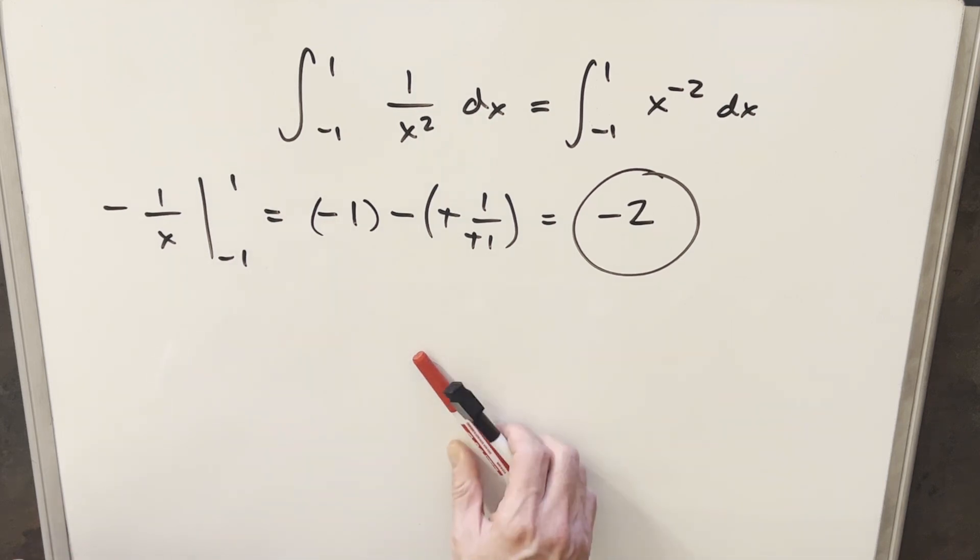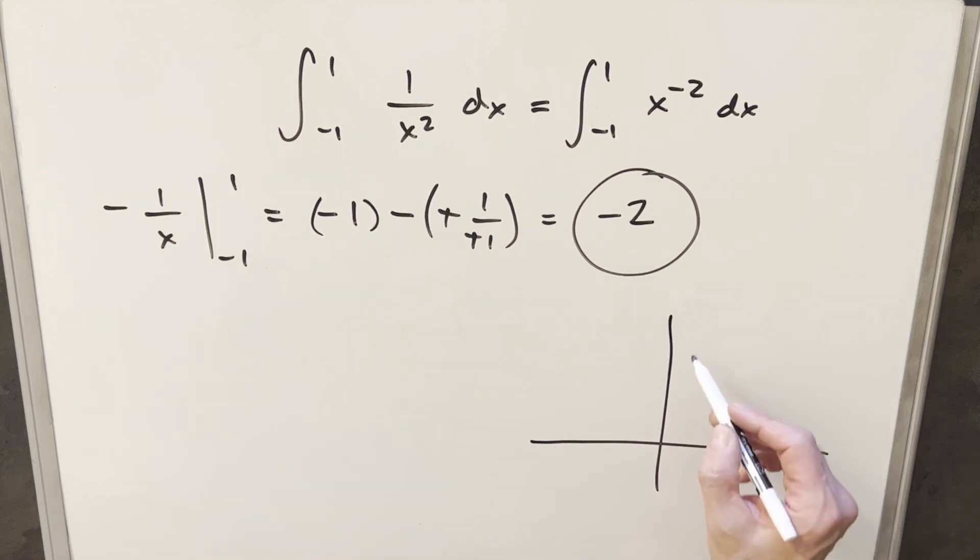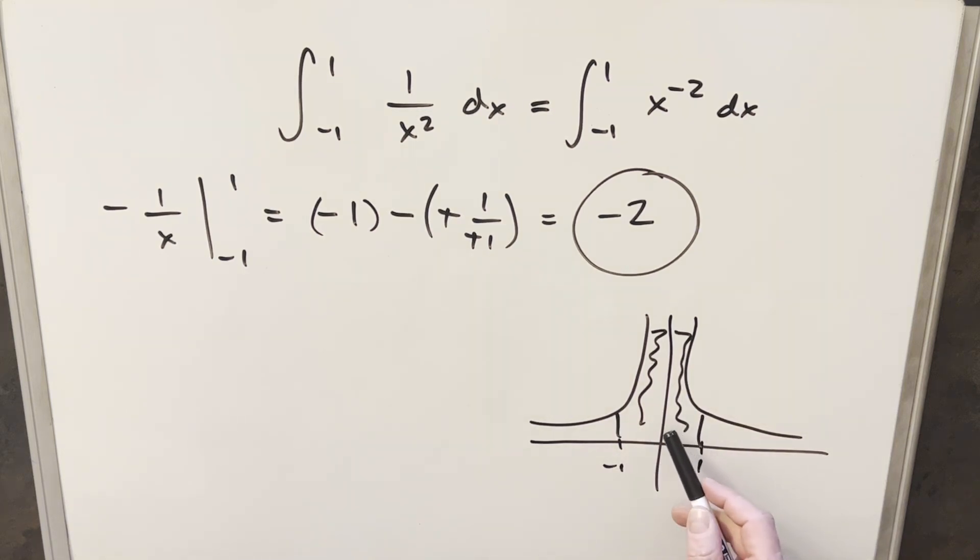But then after you do this and you get minus 2, what you might do is you might just take a look at a graph. And when you do that, you'll notice we have a vertical asymptote around 0. And just kind of eyeballing it, I know this is a rough graph, but we're looking for the area in here between 1 and minus 1. Anyway, just looking at it, there's all kinds of problems. Like there's just no way it can be minus 2 and it looks like a much greater area than even positive 2.